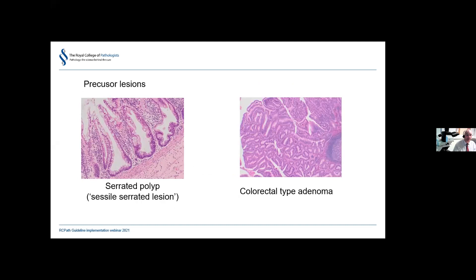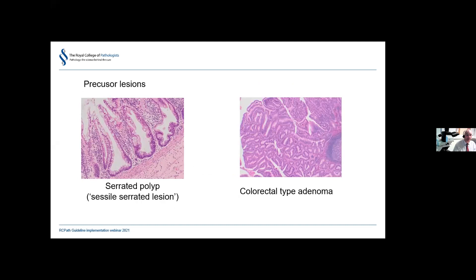There's no time to cover precursor lesions in detail, but there are two main classifications: the serrated polyp (also called sessile serrated lesion) and the colorectal-type adenoma. Serrated polyps in the appendix have different genetics, different prognostic implications, different behaviour, and some different morphology. While it is acceptable to call them sessile serrated lesions, Professor Carr prefers not to, given these differences.